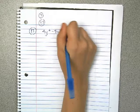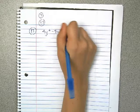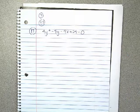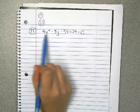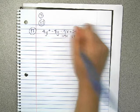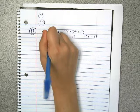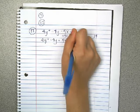4y squared minus 4y minus 4x plus 24 equals 0. The first thing we need to do is we need to keep the y squared and the y terms over here and put the others on the other side. So, plus 4x minus 24 here. So, we end up with 4y squared minus 4y equals 4x minus 24.